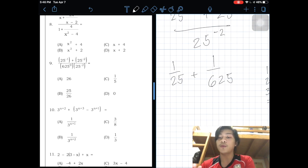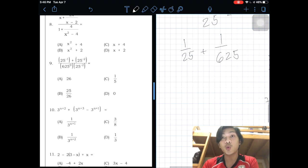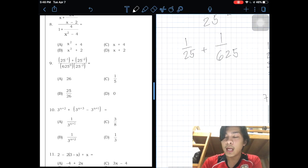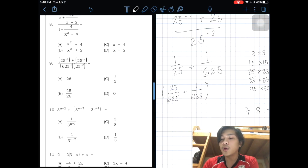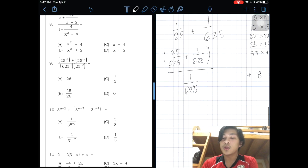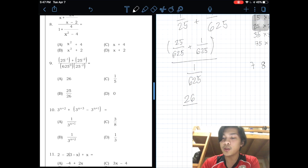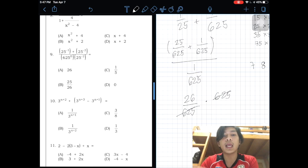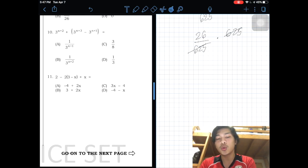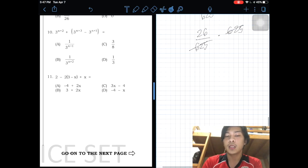Back to the problem. 1 over 25 plus 1 over 625. How many 25s in 625? Which is 25. By fraction rules, this will be 25 all over 625 plus 1 over 625, then divide by 1 over 625. This becomes 26 all over 625 multiplied by 625, cancel, equals 26. Number 9 is B. This one has a correction. Number 9 is B.